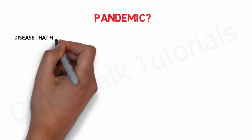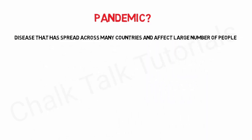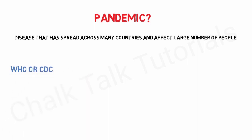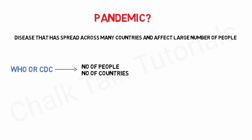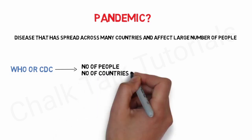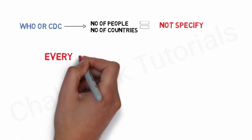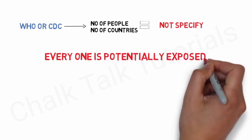What is a pandemic? A pandemic is used to describe a disease that has spread across many countries and affects a large number of people. Neither the CDC nor the World Health Organization specify how many countries or how many people need to be affected in order for something to be declared a pandemic. We assume with a pandemic that everyone can be potentially exposed to the disease.